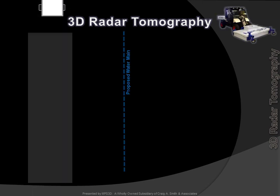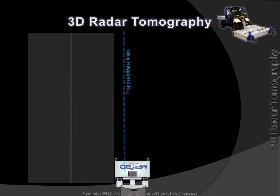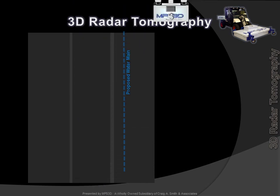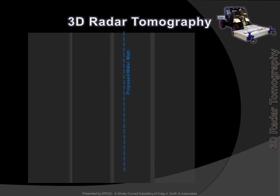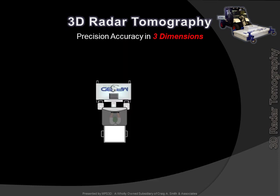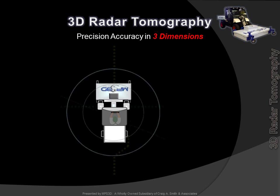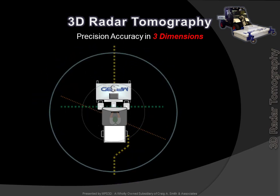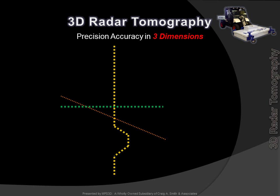Now let's revisit our example project, and this time we'll scan the site with 3D Radar Tomography. Note that RT provides full coverage with very few passes. The RT imagery reveals the precise location — horizontally and vertically — of all the subsurface facilities, known and previously unknown, including changes in direction. Precision accuracy in 3 dimensions. Known, unknown, abandoned or forgotten — Radar Tomography locates them all.